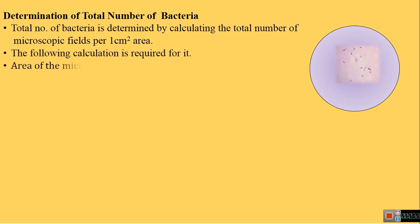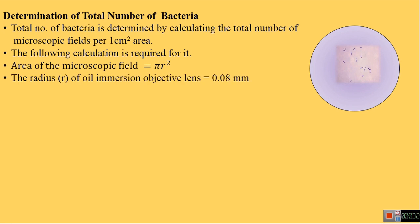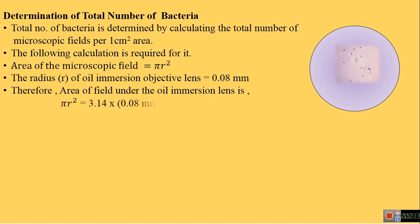The total number of bacteria is determined by calculating the number of microscopic fields in 1 cm². The area of the microscopic field is calculated by the formula π r². The radius of an oil immersion objective lens is usually 0.08 mm. Therefore, the area of a field under oil immersion is 3.14 × 0.08² mm² = 0.02 mm².